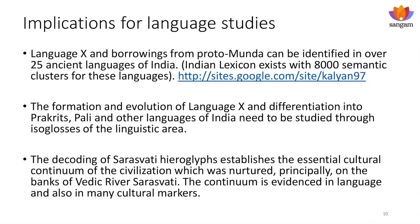From these sources of history — Epigraphia Indica now — they have implications for language studies. Language X has been postulated by some linguists, and borrowings from Proto-Munda, Mon-Khmer languages or Austro-Asiatics, can be identified in over 25 ancient Indian languages. In India the lexicon has been compiled with over 8,000 semantic clusters showing trisensual semantic unity and cultural unity of all Bharatiya languages. The formation and evolution of Language X and the differentiation into Prakrits, Pali and other languages of India, need to be studied deeper through isoglosses of the linguistic area.